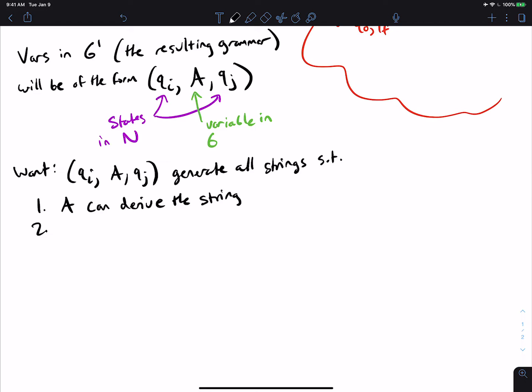for the NFA as well as the strings that can be derived from the start variable and we want this triple right here to generate the strings that belong to both of those cases because we're doing the intersection here. So we want to generate all strings such that A could generate, can derive the string and starting at QI, reading the string goes to QJ. Or QJ, I should be more precise in that QJ is one of the states you can get to after reading whatever the string is.